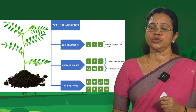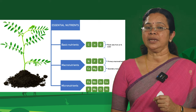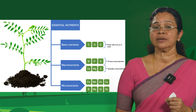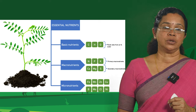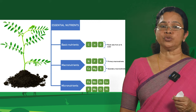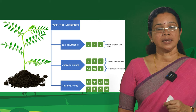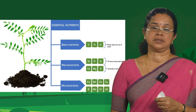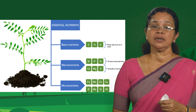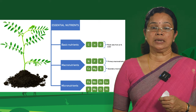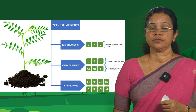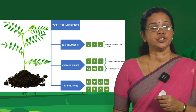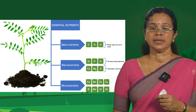Macronutrients — as the name indicates, macro means bigger in size — are nutrients required in comparatively larger quantities. That includes nitrogen, phosphorus, potassium, calcium, magnesium and sulfur.